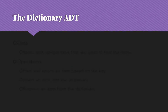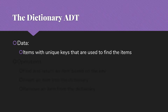Where we want to start is with the dictionary abstract data type. The data for that is items with unique keys that are used to locate the items. The idea behind a dictionary is that we're storing a bunch of things and we want to be able to look them up — not unlike the way we look up meanings for words by looking up the words.